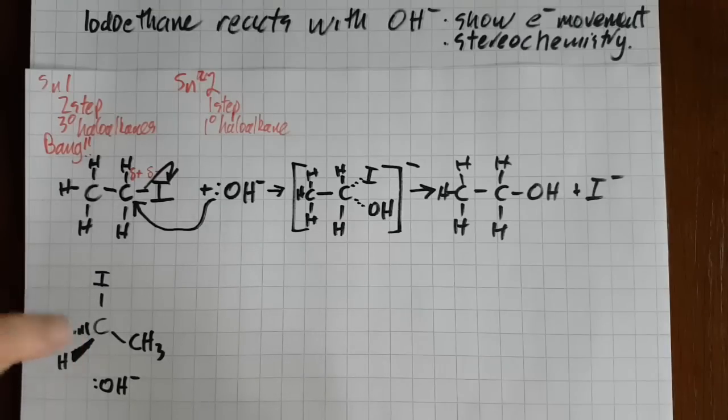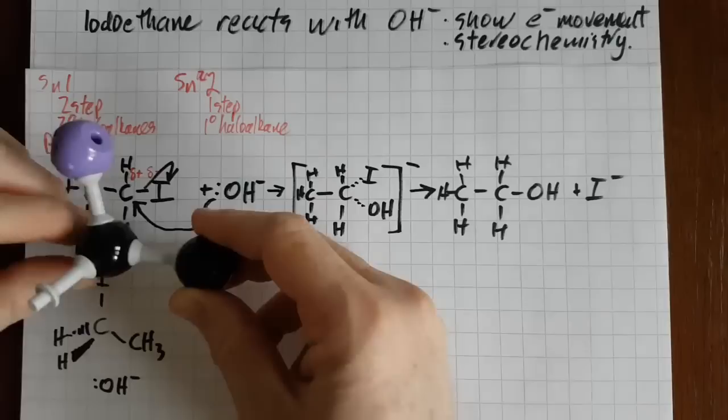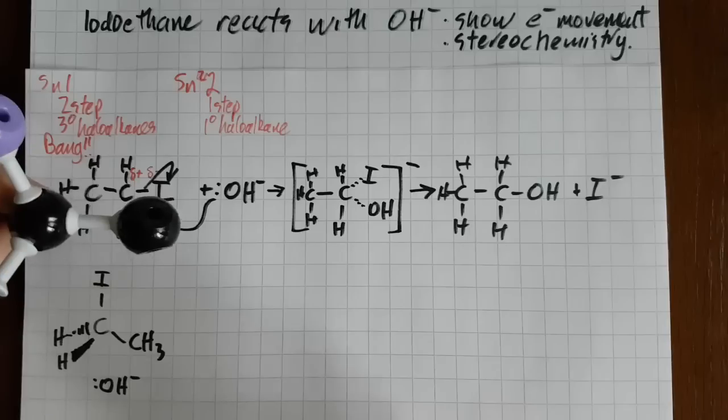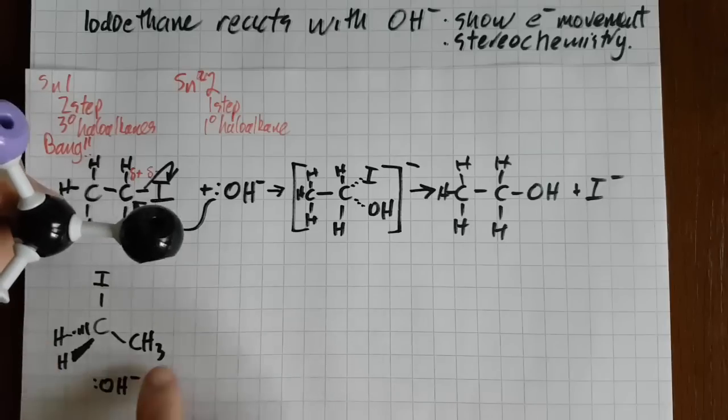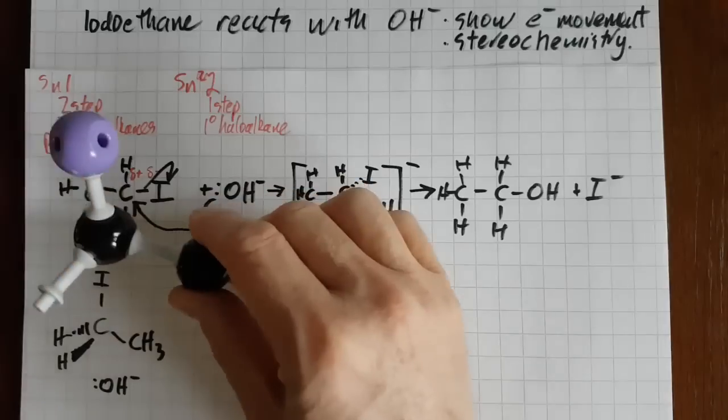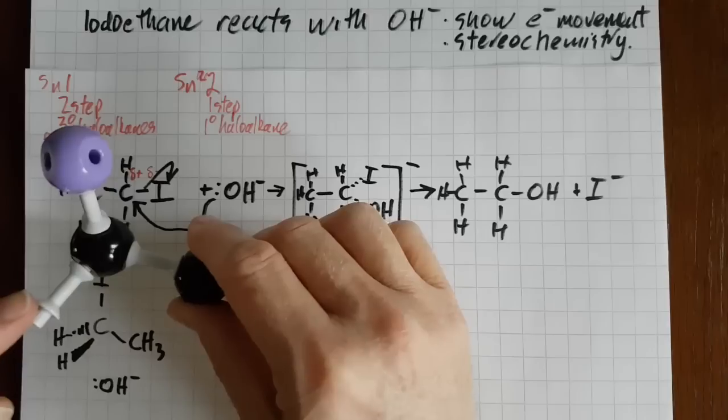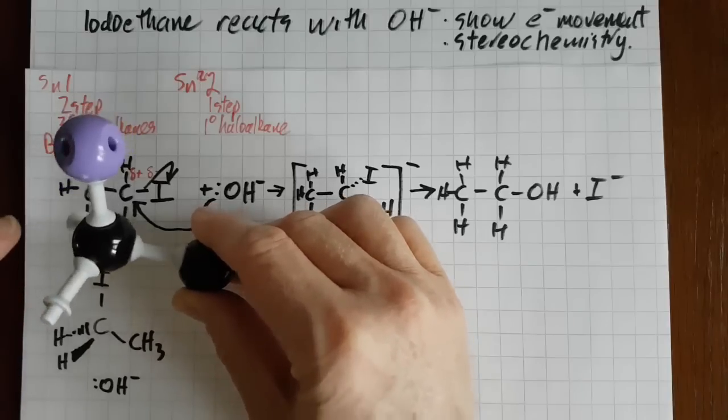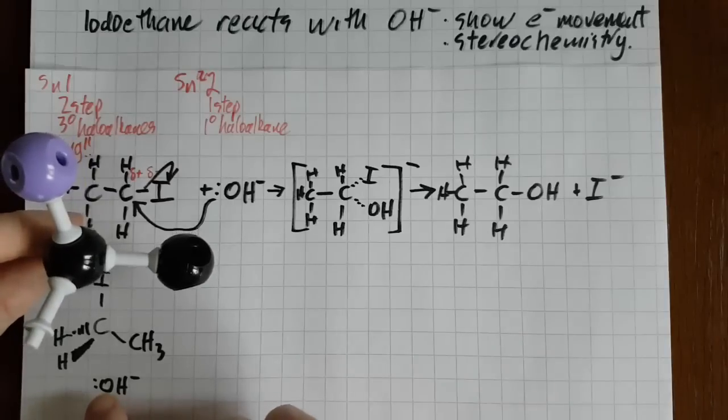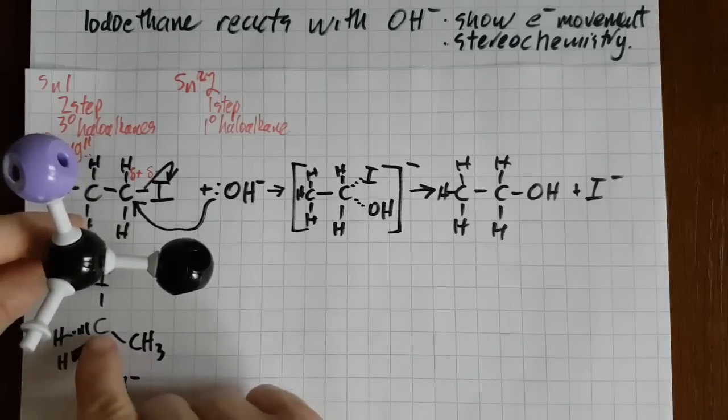The solid line is the hydrogen coming out, and the dashed line is the hydrogen going back. Now to simplify it, I've got this here. How have I simplified it? Well, I've taken off the hydrogens because it was just getting too cluttered. The wedge is the hydrogen coming forward, and the dash is the hydrogen going back. And I'm going to have that OH minus, the hydroxide ion, coming up there.